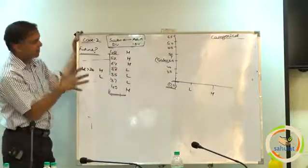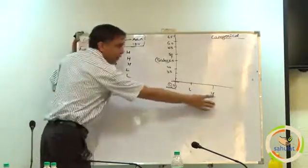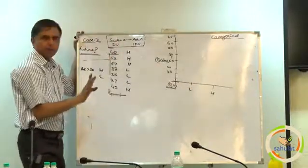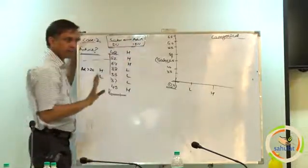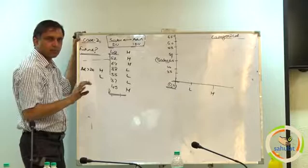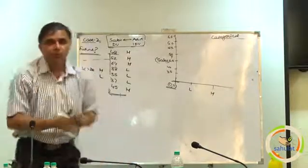In the graph, there is general convention, dependent variable comes on y axis, independent comes on x axis, so there are only 2 points. Earlier there were so many points, now will there be only 2 points, low and high? Yes or no? Yes sir. There are only 2 points, so what sort of graph you will make?